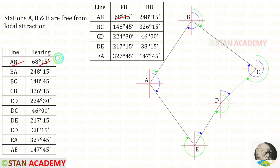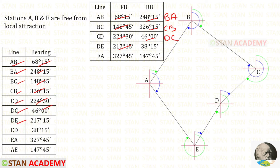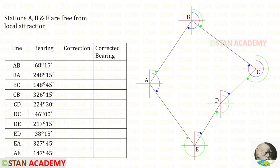The bearings to enter are: AB, BA, BC, CB, CD, DC, DE, ED, EA, and AE. We also add two more columns — correction and corrected bearings. Stations B, A, and E are free from local attraction, so the bearings taken from these stations will be correct.